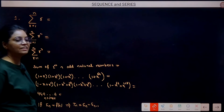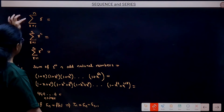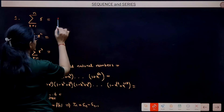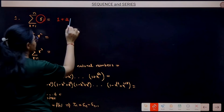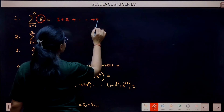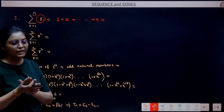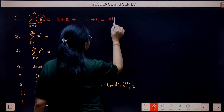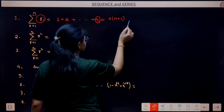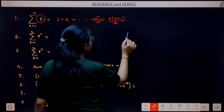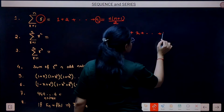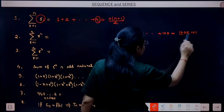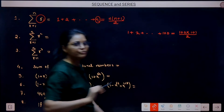First standard result: sum of first n natural numbers. Sigma of r, r from 1 to n, means 1 + 2 + 3 + ... + n. This is an AP; its sum formula gives n(n+1)/2. Use it directly: for 1 + 2 + ... + 100, the answer is 100 × 101 / 2.